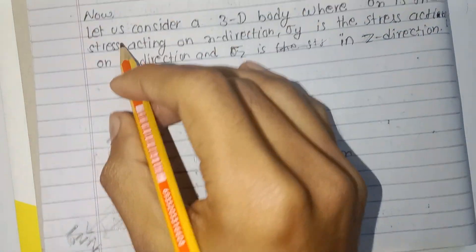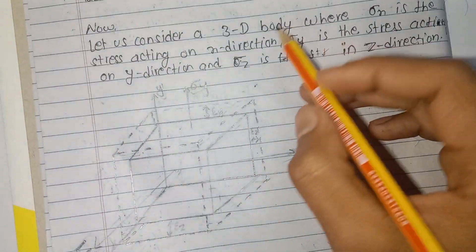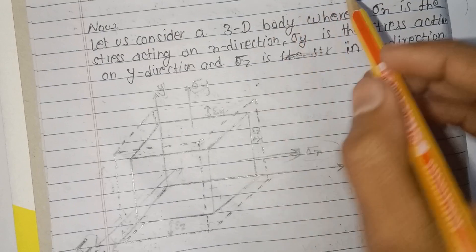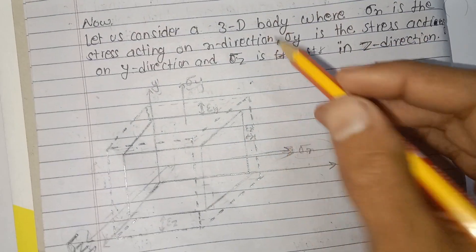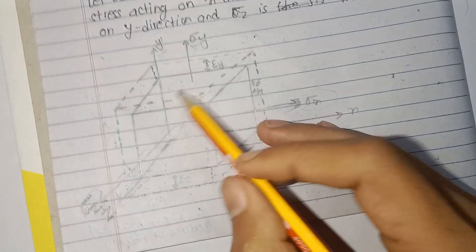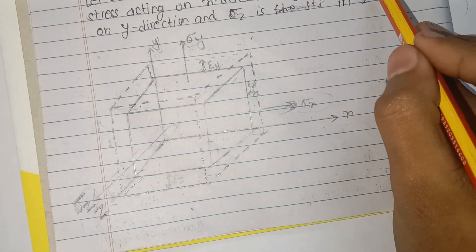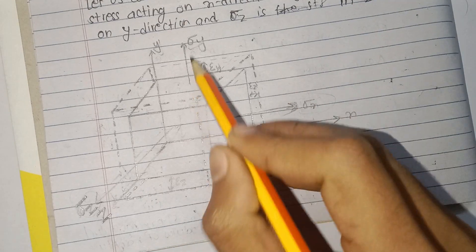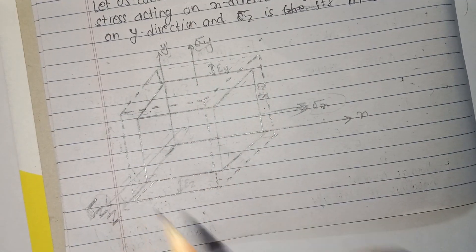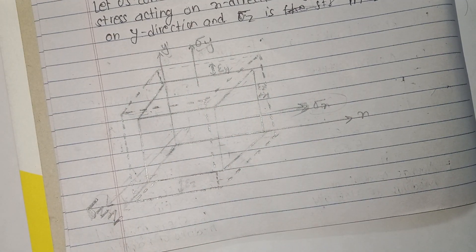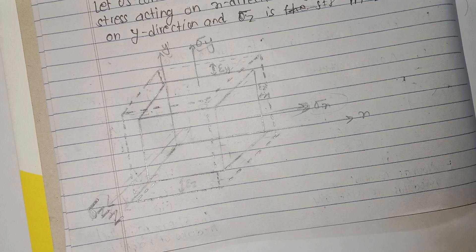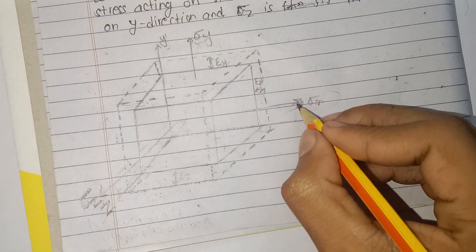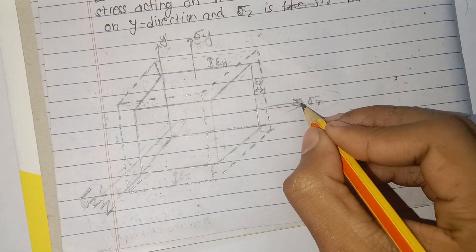Let us consider a three-dimensional body. We consider sigma x in the x-direction, sigma y in the y-direction, and sigma z in the z-direction. Now we work with sigma x.